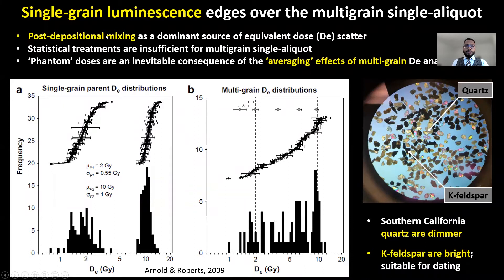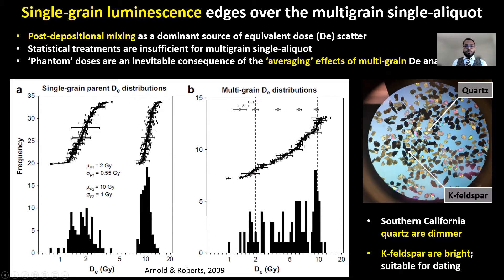Post-depositional sediment mixing is one of the major challenges in luminescence dating, and statistical techniques are often insufficient to distinguish mixed populations in the multi-grain method. Here we show two methods: Plot A shows two distinct subpopulations of equivalent doses determined using the single grain technique, where each individual grain is targeted. Plot B shows a broad scatter of equivalent doses based on multi-grain single aliquot methods, combining multiple grains to get one signal. Phantom doses are inevitable consequences of this averaging effect — we might get a signal that is an average of both subpopulations. Single grain methods offer much higher resolution and can help resolve the existence of two or more subpopulations.